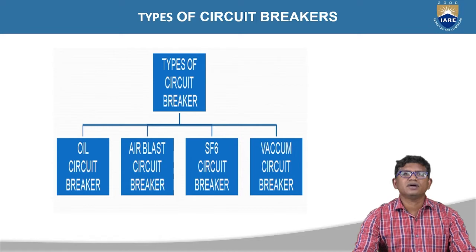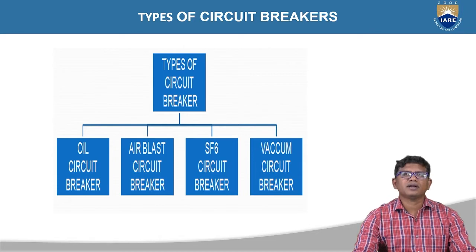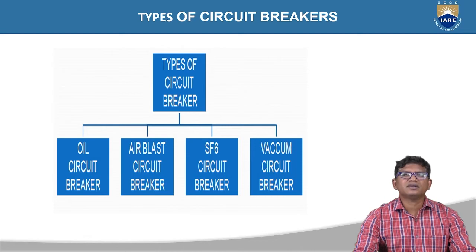The circuit breaker is a switch consisting of fixed terminals and moving terminals. Under normal operating conditions, the fixed contact is closed with the moving contact. If any fault occurs, the moving contact is withdrawn from the fixed contact. Basically, it consists of two devices: relay and tripping coil. The relay senses the abnormal condition and activates the tripping coil.